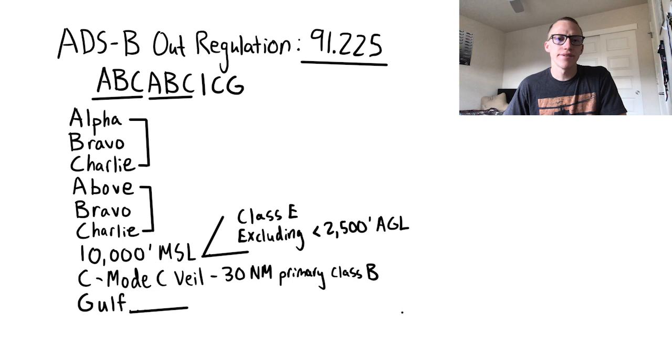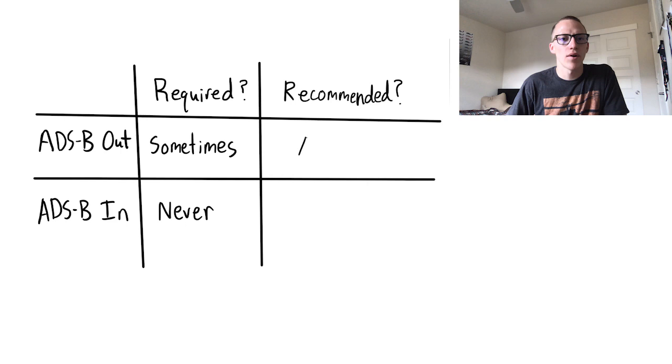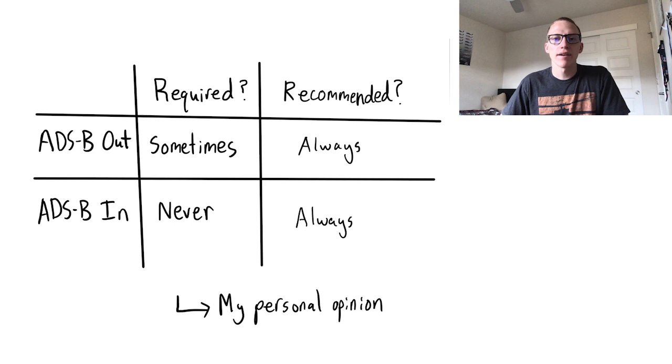And lastly, it's required in Class Echo airspace over the Gulf of Mexico, above 3,000 MSL, and within 12 nautical miles of the U.S. coast. Now unlike ADS-B out, there aren't required requirements for ADS-B in, but it is highly recommended. If you're flying frequently, it'll definitely pay off, from helping you choose more efficient routes, to avoiding aircraft damage, or even preventing a mid-air collision, which could save your life. I definitely personally recommend it.